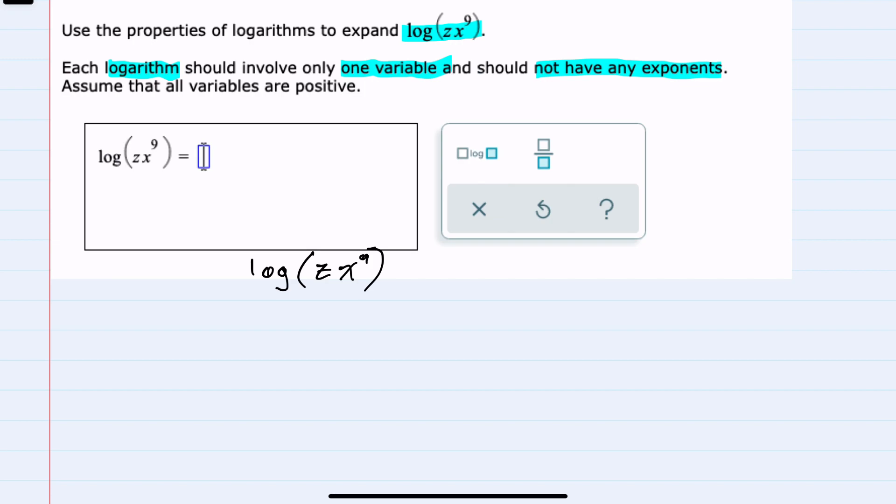I can start by recalling that when I have the log of a product, so here the z is being multiplied by x to the 9, I can rewrite this as a log with the same base of the first part of that product plus a log with that same base being taken of the second part of that product.